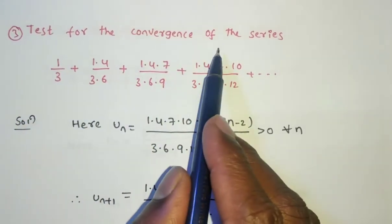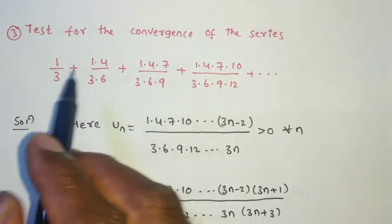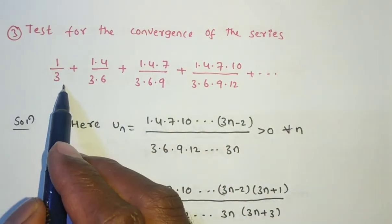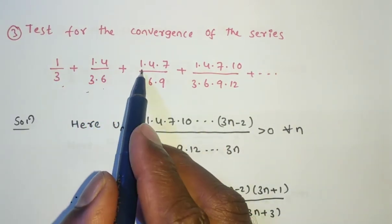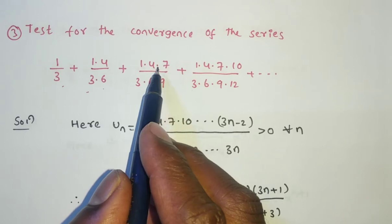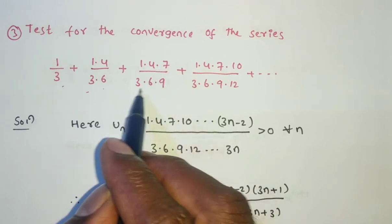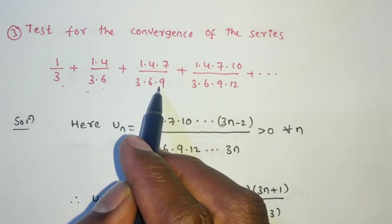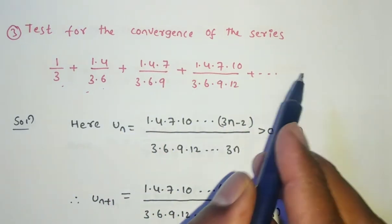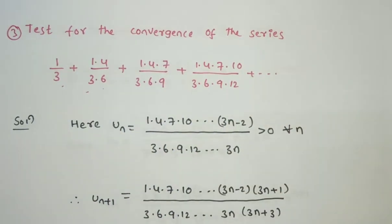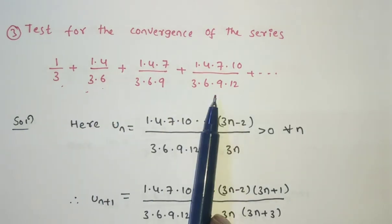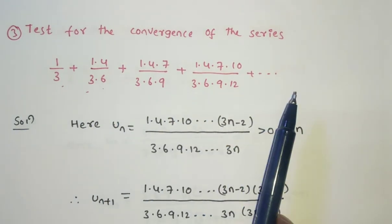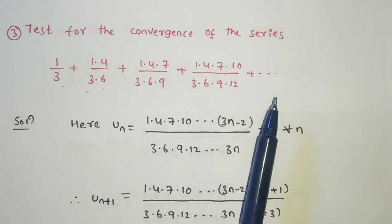Test for the convergence of the series: 1/(3) + 1×4/(3×6) + 1×4×7/(3×6×9) and so on. This is the given series — the first term, second term, third term, fourth term — but the nth term is not given.